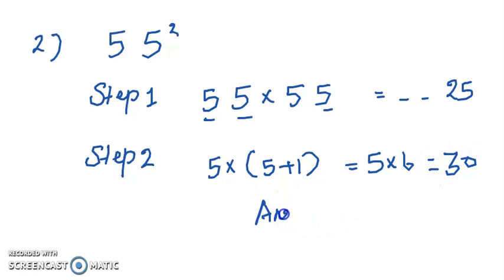Answer - 30 and the last two digits is 25. So 55 times 55 is 3,025. This way you can find square of any number with a unit digit as 5.